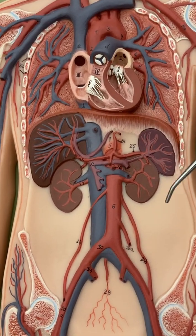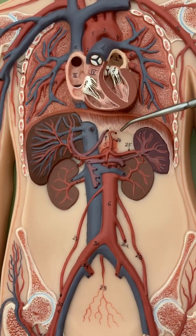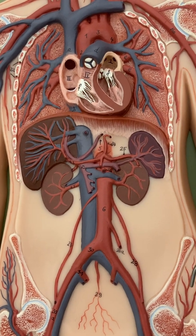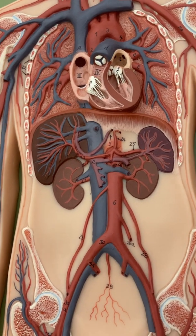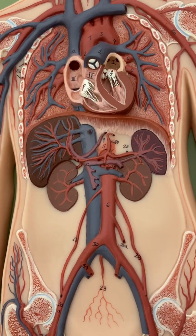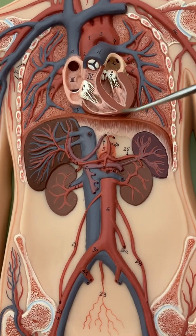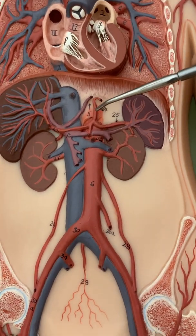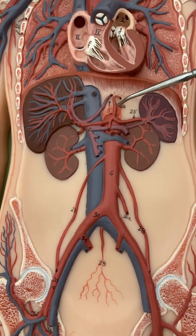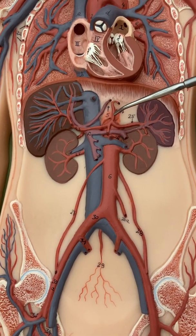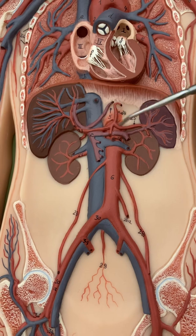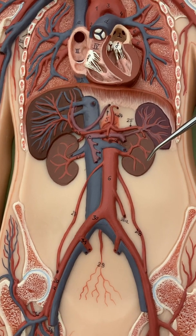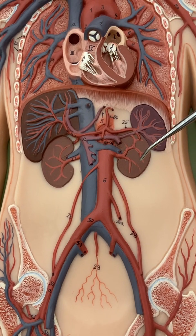Once we get into the abdomen there are some arteries to learn. The best way to learn these is to remember where the organs are from anatomy.